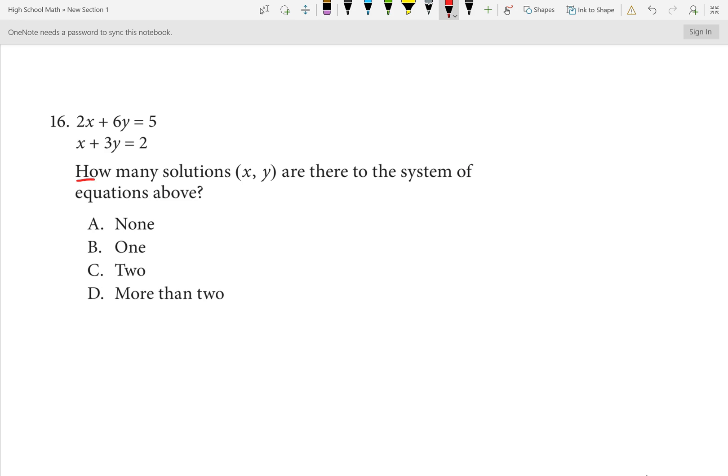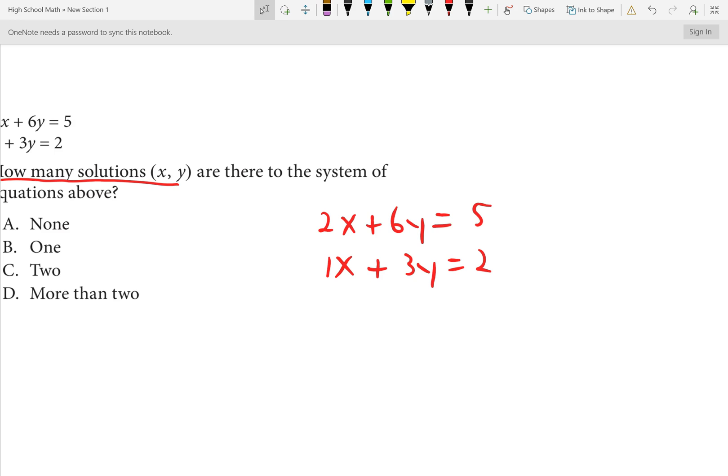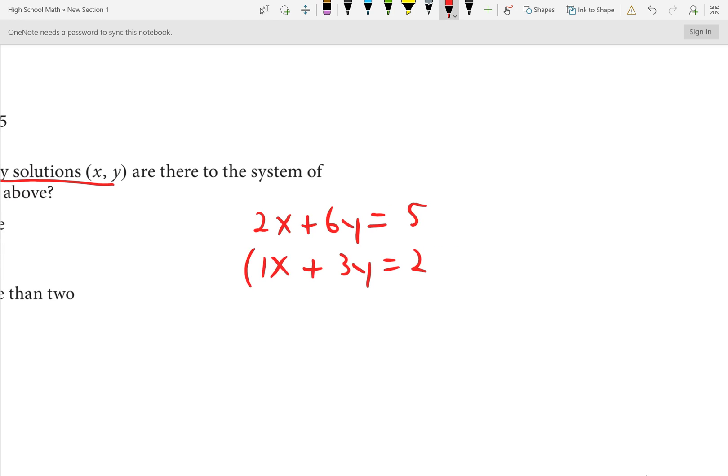Number 16. How many solutions? That's what we're looking for. Are there for the system above? We learned a lot of ways to solve a system. One easy way is the elimination method. In this case, I can quickly see that this is a 1X and that's a 2X. So let me multiply this bottom equation by a negative 2. I'm multiplying the whole bottom equation by negative 2. When I do, we get negative 2X minus 6Y equals negative 4. The top one remains the same. 2X plus 6Y equals 5. Now we can add down the columns.